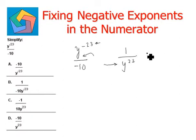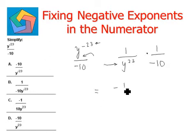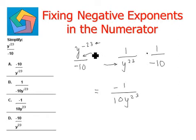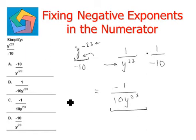When this negative exponent goes to the denominator, it becomes positive, and our 1 over negative 10 remains as it is. Rearranging this gives us negative 1 over 10 y to the power of 23. All we need to do is move the negative exponent to the denominator, along with the variable, so that it becomes positive. This is our final answer, which matches option C.